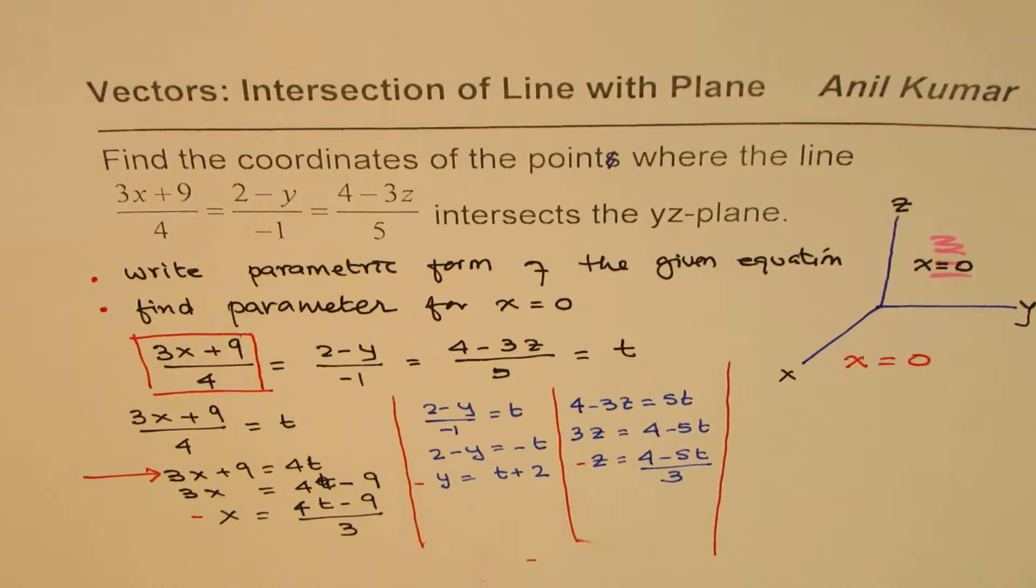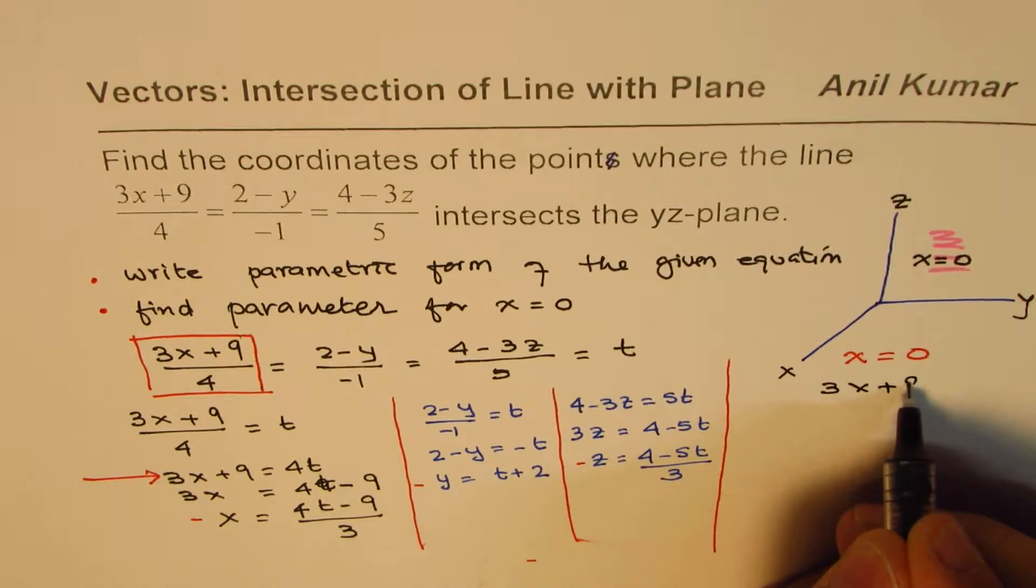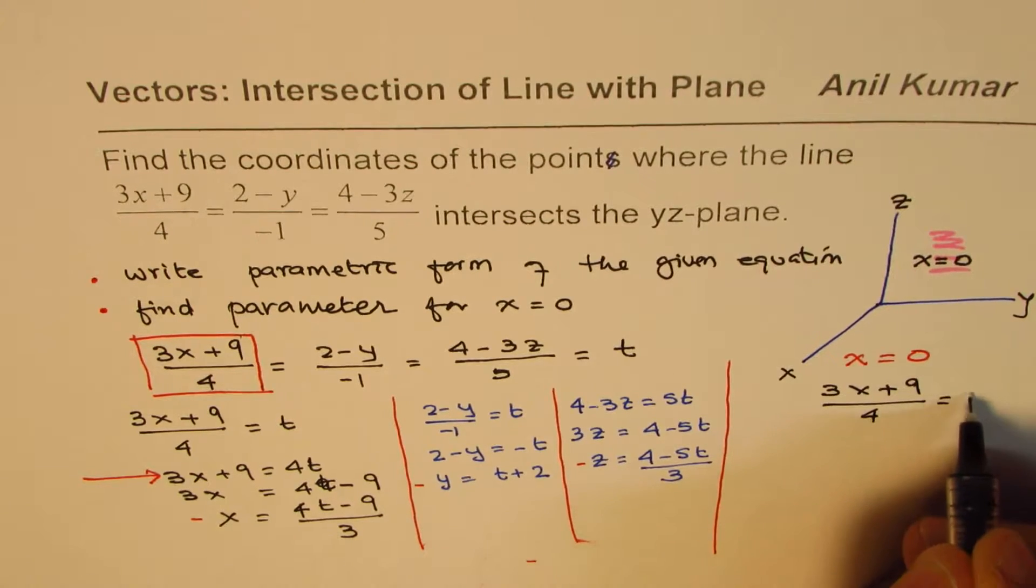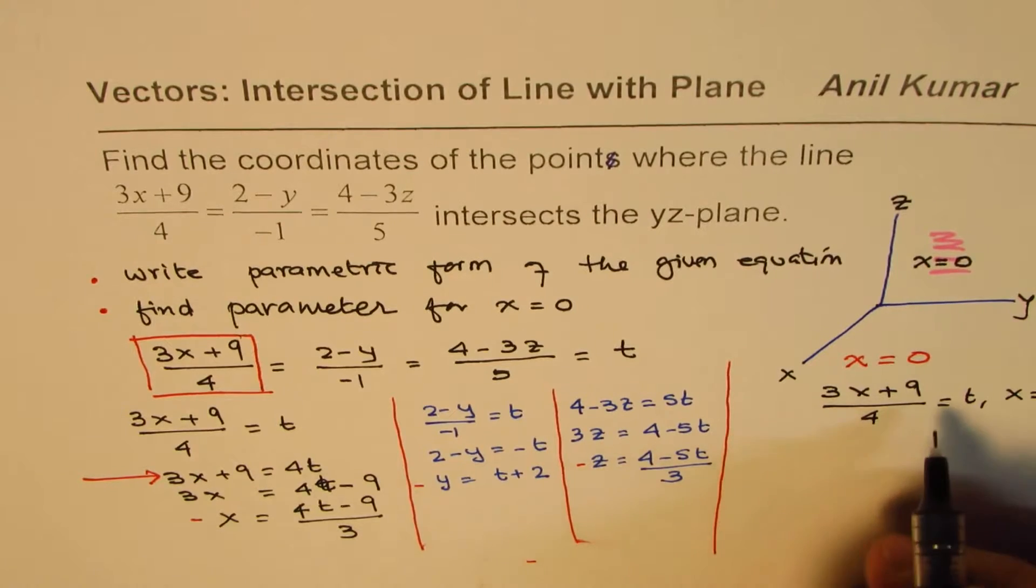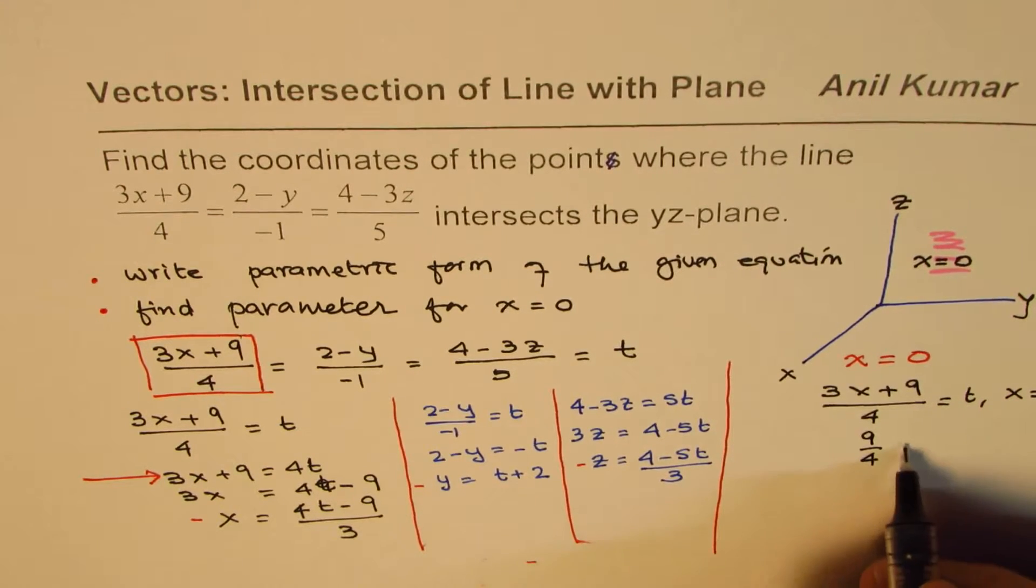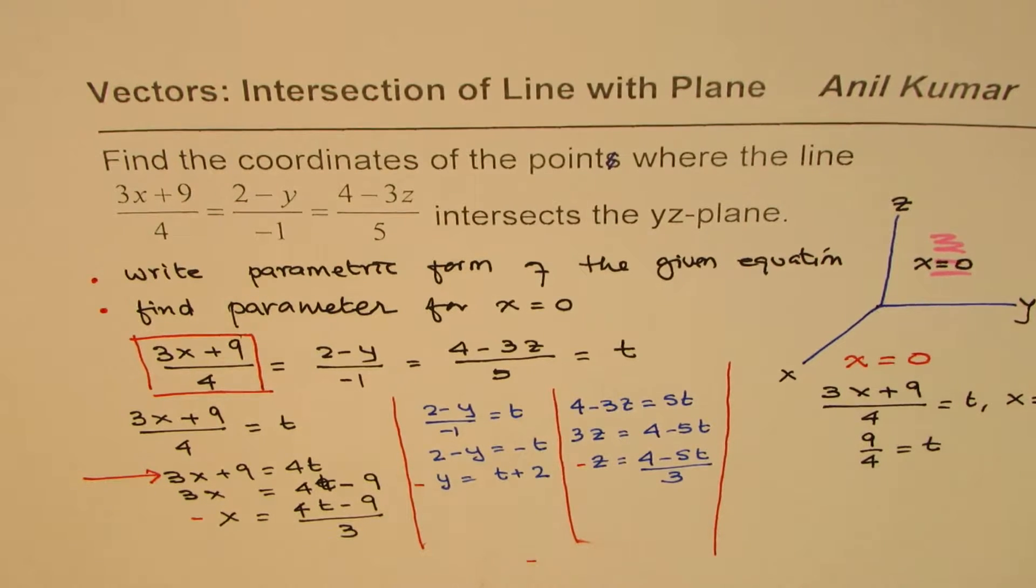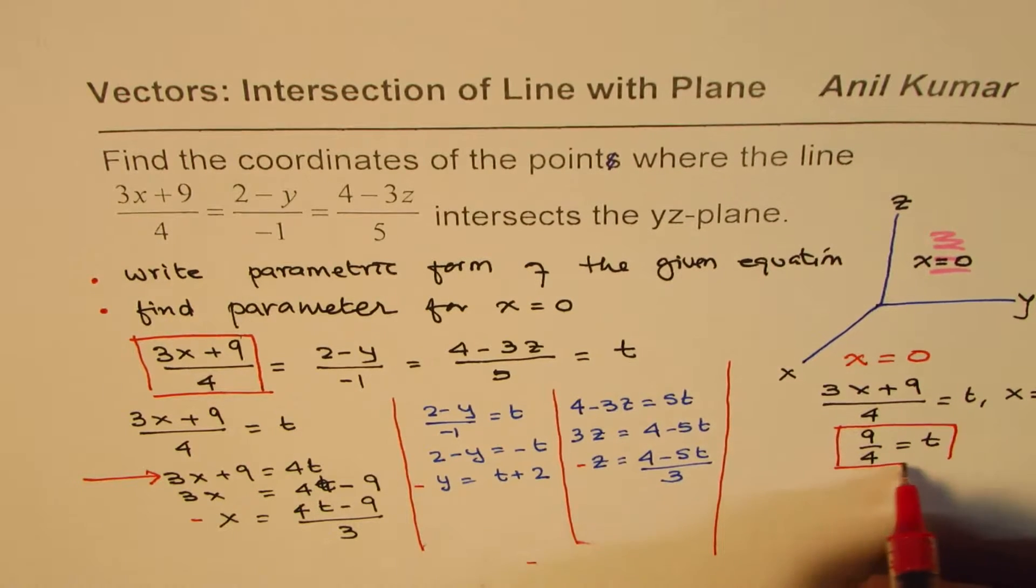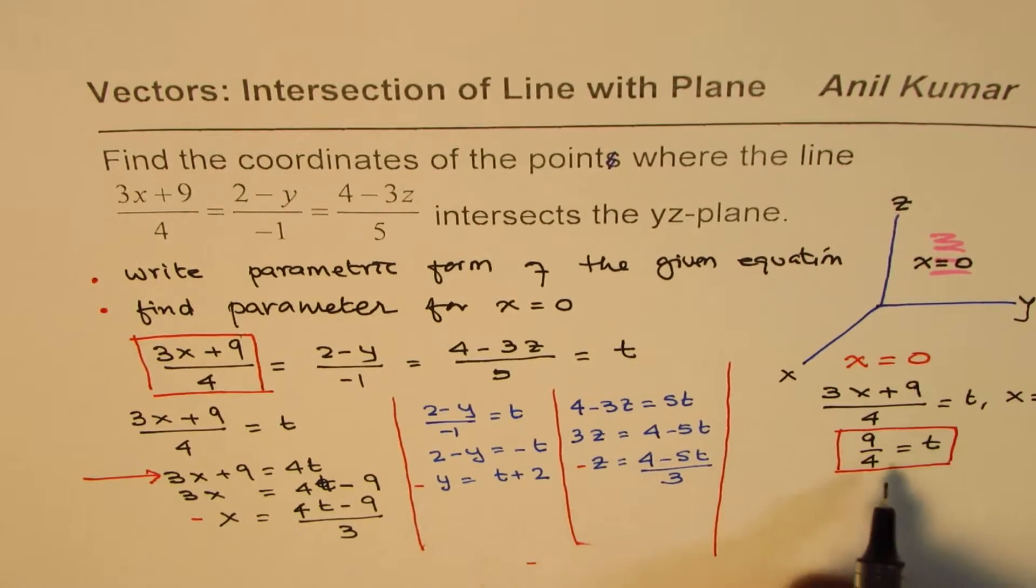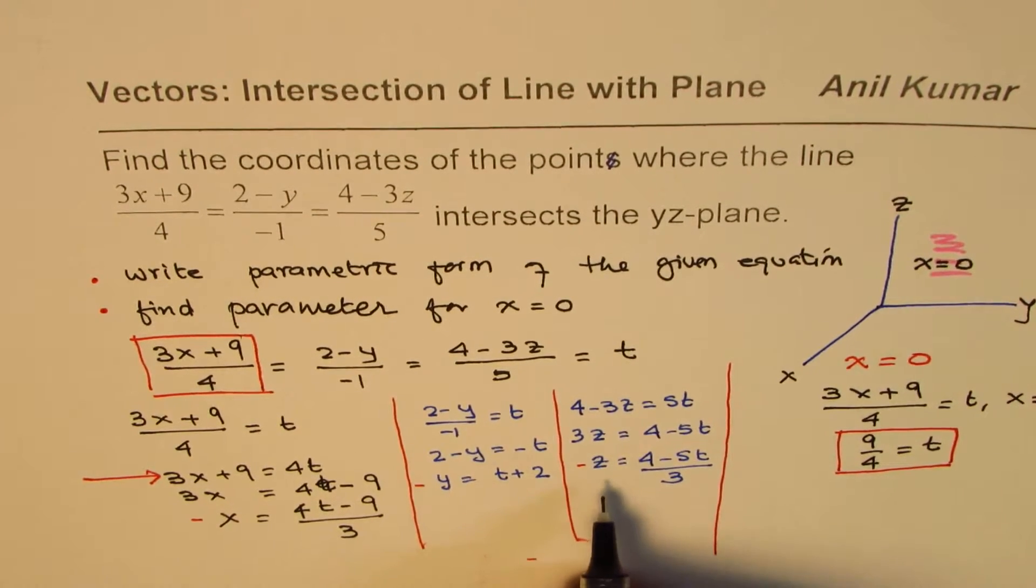So in this equation, which is for us (3x+9)/4 = t, I'm going to substitute x = 0. If I write x = 0, I get 9/4 = t. So the value of t is 9/4. Now what do you need to do is calculate y and z for t = 9/4. These kind of fractions may be difficult at times to work with. Substitute t = 9/4 and get y and z.